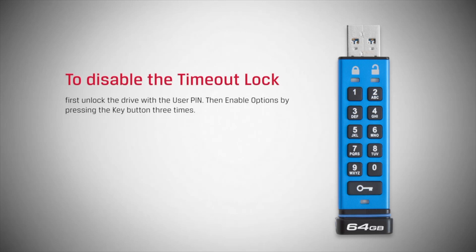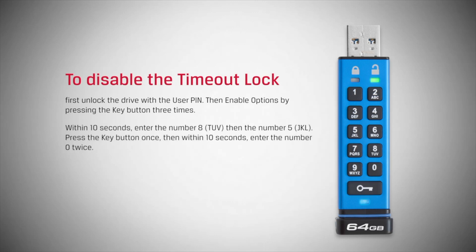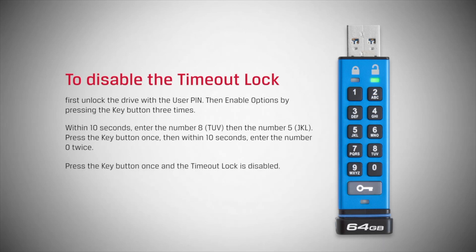To disable the timeout lock, first unlock the drive with the user pin. Then enable options by pressing the key button three times. Within 10 seconds, enter the number eight and then the number five. Press the key button once. Then within 10 seconds, enter the number zero twice. Press the key button once and the timeout lock is disabled.